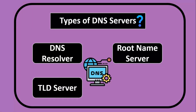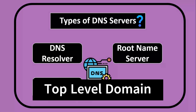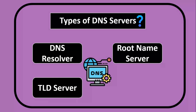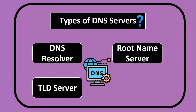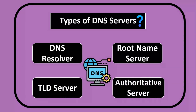The third type is the TLD Server — abbreviation for Top Level Domain. The TLD server is responsible for managing DNS records for top level domains, such as .com, .org, or .net. They provide a referral to the authoritative DNS server for a specific domain within their TLD. The fourth and final type is the Authoritative Server, which stores the IP address of the requested website. The authoritative DNS server responds with the IP address associated with the requested domain.